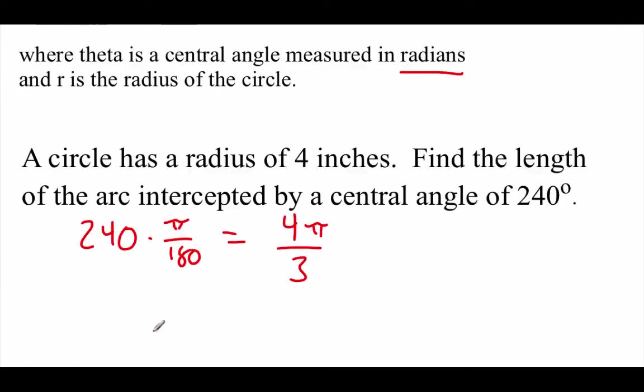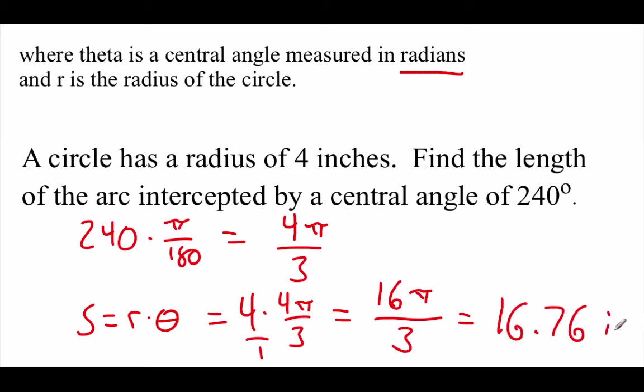Now, if we want to use that formula where it says S equals R times theta, all we have to do is plug in the information we have. We know the radius is 4 inches. We're going to multiply that by our angle, which we just found to be 4 pi over 3. Looking at multiplying these fractions together on top, if we take 4 times 4, that's 16 pi, and on bottom, we end up with 3. Now, from here, we could take this and punch it into our calculator to get an actual measure. If we do that, we'd get about 16.76 inches if we round it off to two decimals.